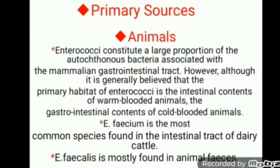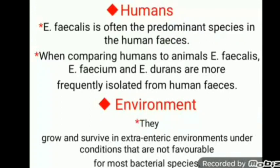The two most important species of Enterococci are Enterococcus faecium and Enterococcus faecalis. Enterococcus faecium is the most common species found in the intestinal tract of dairy cattle. Enterococcus faecalis is mostly found in animal faeces — the waste collected from food animals.